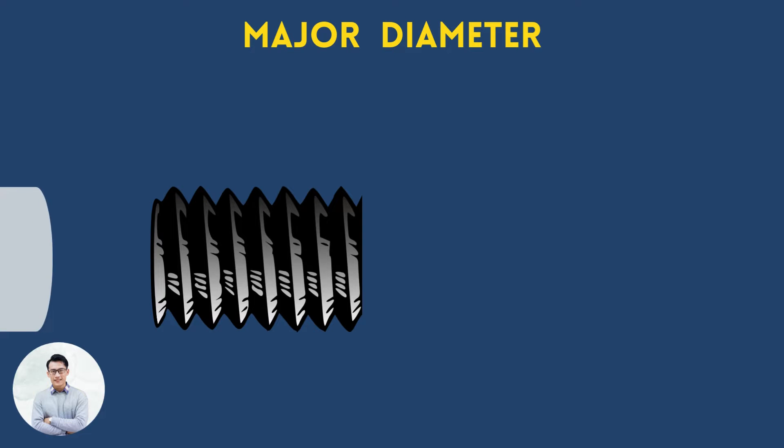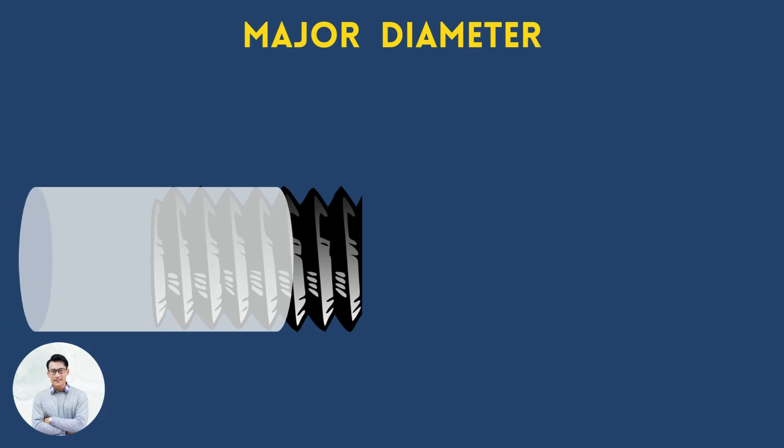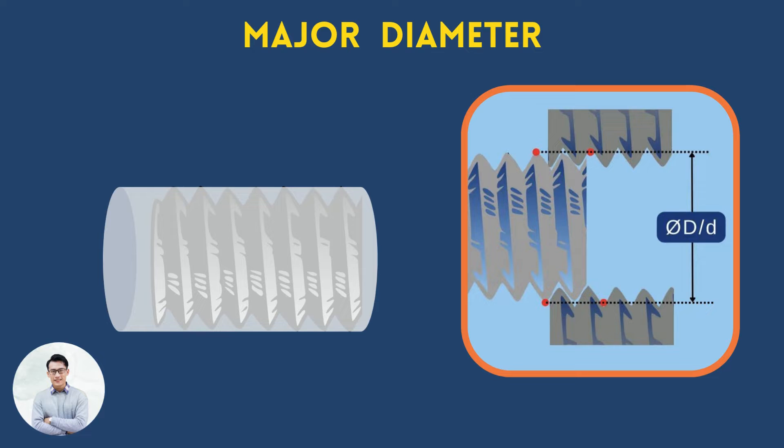Major diameter is the diameter of an imaginary cylinder that touches the largest diameter of a thread. The nominal value of the major diameter equals the nominal thread size.